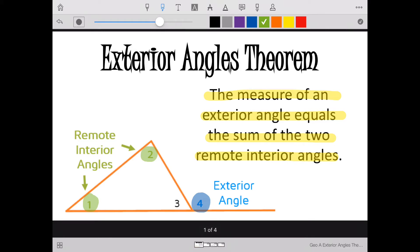So two remote interior angles. And what my theorem tells me is that my exterior angle, so angle 4, the measure of angle 4, my exterior angle, is going to equal my two remote interior angles added together.